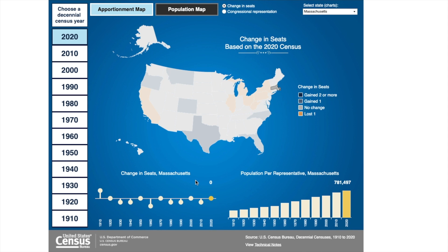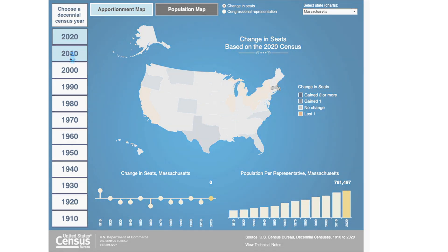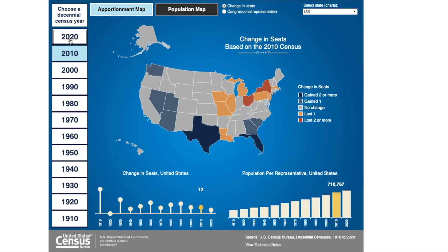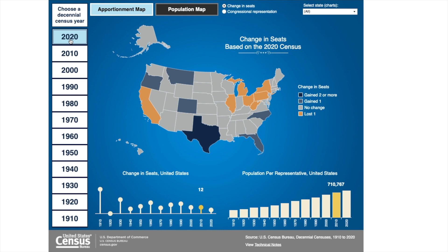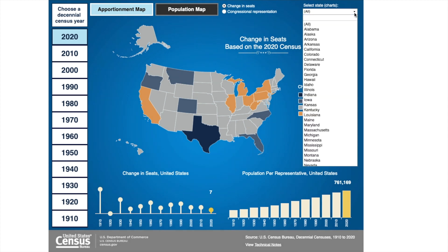If you would like to visualize data for a new decennial census year for your state, you can select a new year from the bar on your left. However, once you click on the new year, your map goes back to the default view of the United States, so you're going to need to reselect your state. If you would like to lock in the view of your state, you have to use the drop-down menu to make your selection.